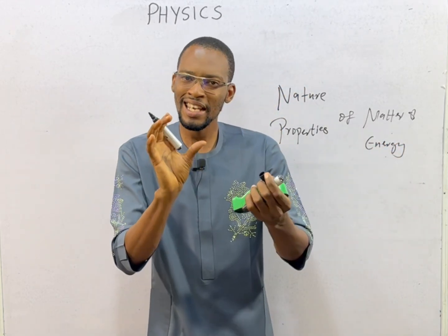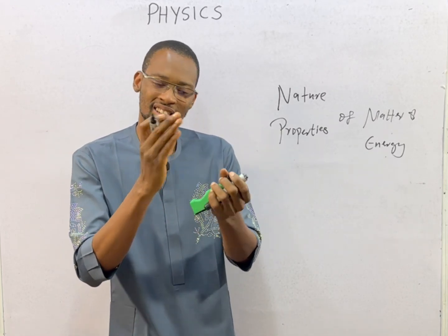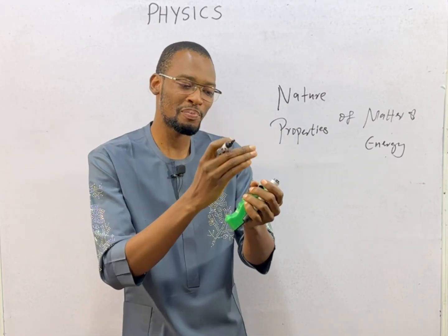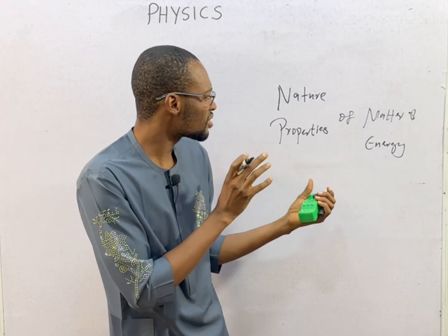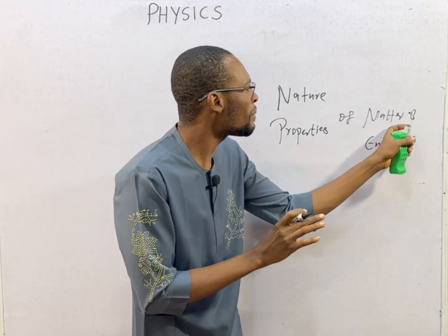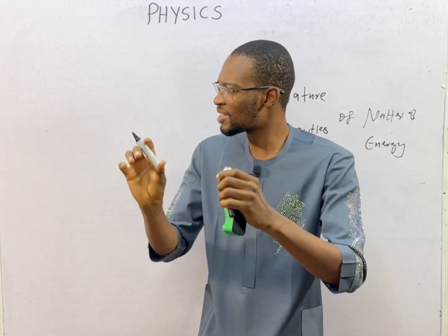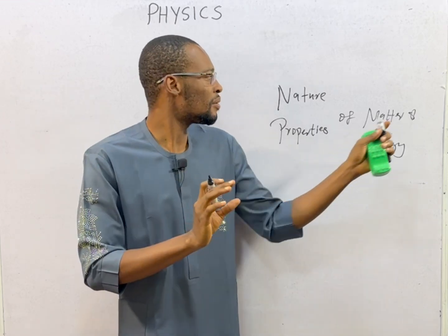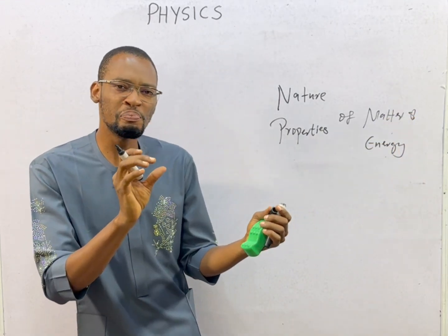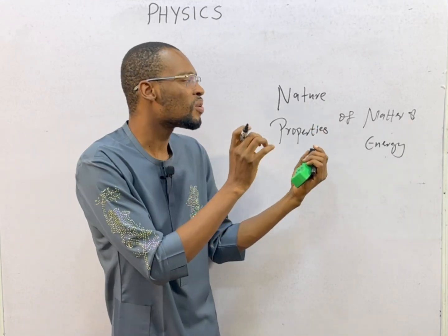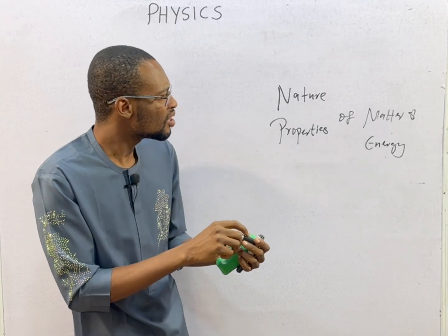Look at this. Chemistry is the study of the CPU of matter: C for composition, P for properties, and U for uses. Physics, on the other hand, studies matter and energy. We can therefore say that physics is the study of matter in relation to energy.